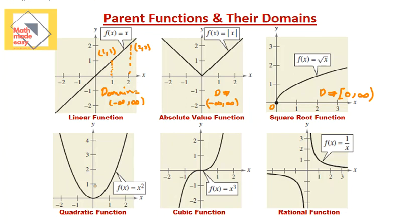The next is the quadratic function — f of x equals x squared — which looks like a parabola. Its domain starts from negative infinity to infinity. Then there is the cubic function — f of x equals x cubed — which extends forever in both directions, with representations of both negative and positive numbers. So its domain is also from negative infinity to infinity.